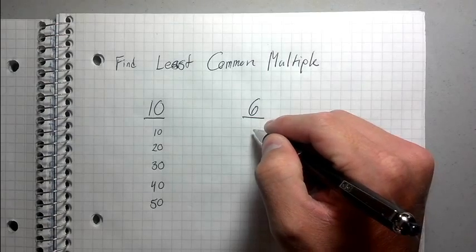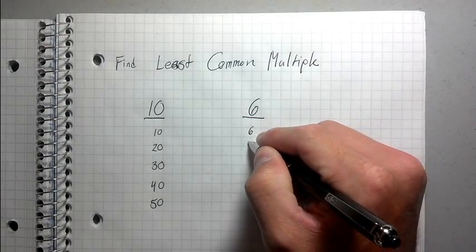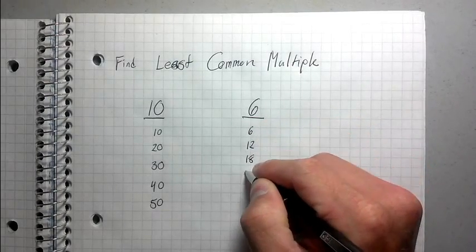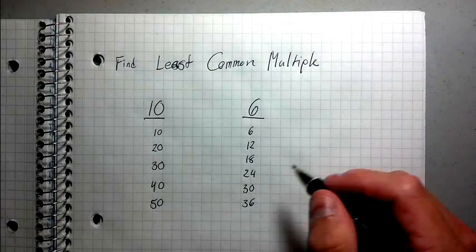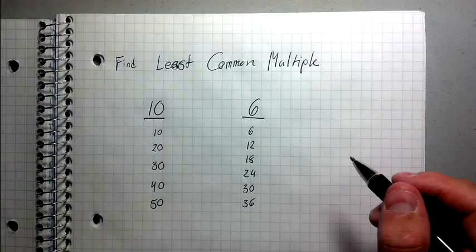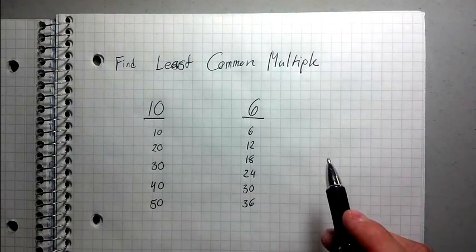Let's list the multiples of 6: 6, 12, 18, 24, 30, 36. Okay. And I could keep going, but I don't have to actually go any farther because I can see the answer right now.